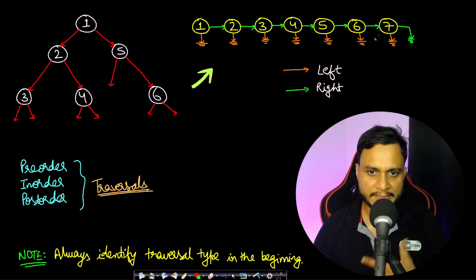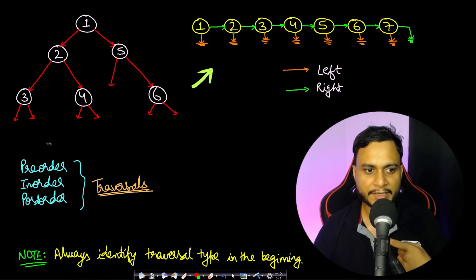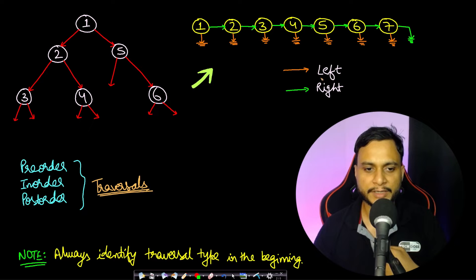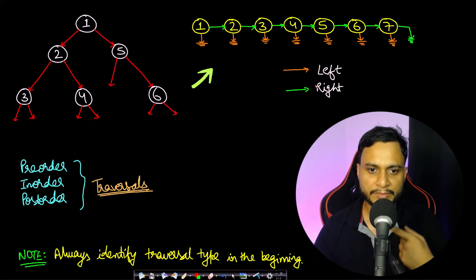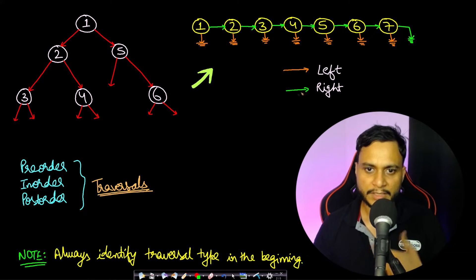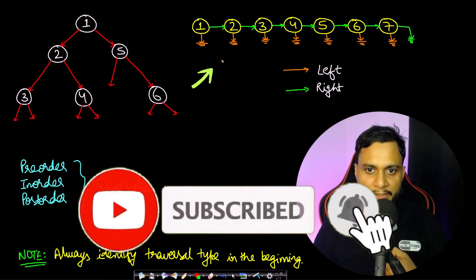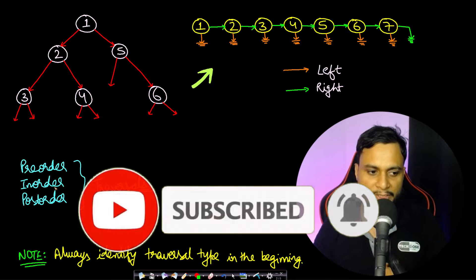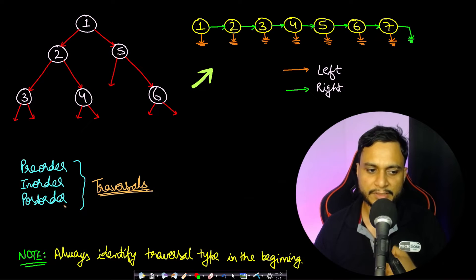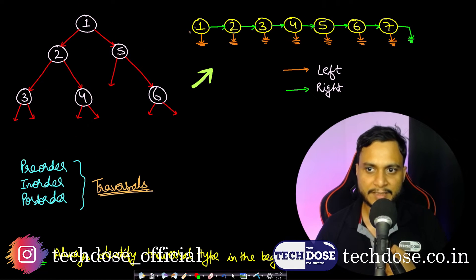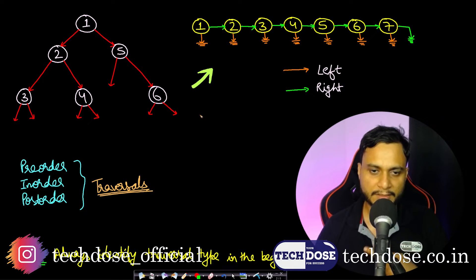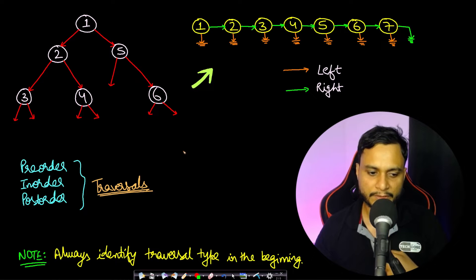Given a tree and an example linked list, the first thing we need to do is identify what tree traversal gives the same order as the linked list. In this problem they have made it easy by saying it is pre-order traversal. If it had not been mentioned, we would have to compare using pre-order, in-order, and post-order traversals.